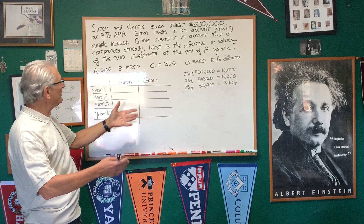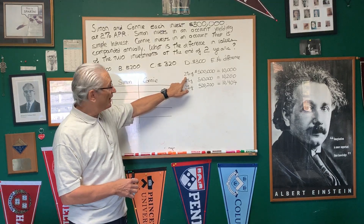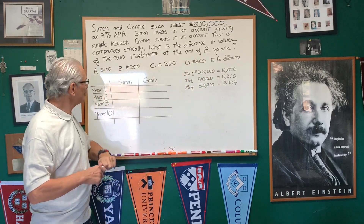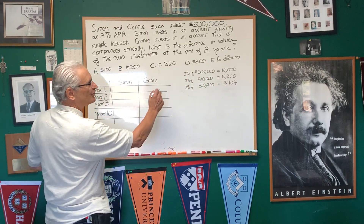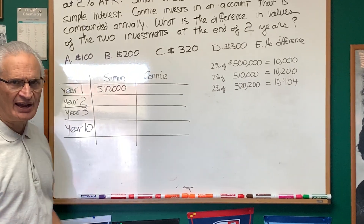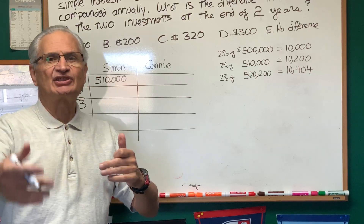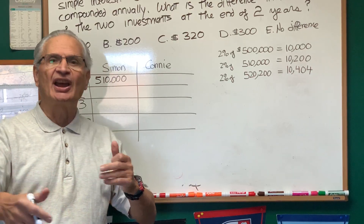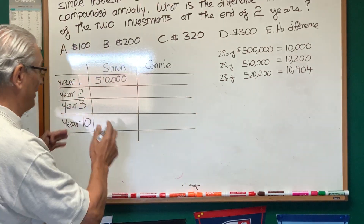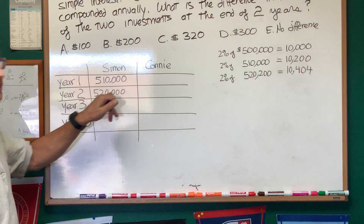So let's first take up the simple interest case. We simply multiply the 2% interest rate times the initial investment, the principal. 2% of $500,000 is $10,000. At the end of year one, $500,000 plus $10,000 is going to be $510,000. Now the thing about simple interest is that at the end of each application of the interest, the same amount of interest is going to be added year after year — it's always based on the initial principal. So after year two, the value of the account is going to be another $10,000: $520,000.